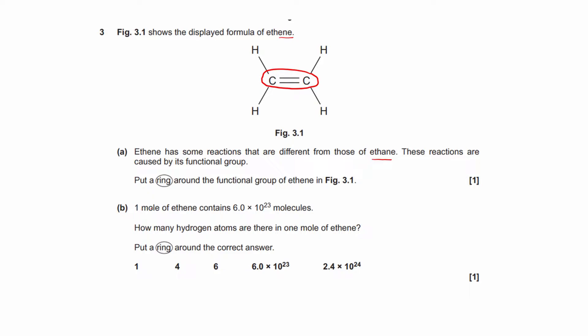Question 3b. 1 mole of ethene contains 6.0 times 10 to the power of 23 molecules. So that's a big number with 6 and 23 zeros. That's how many molecules of ethene there are in 1 mole. How many hydrogen atoms are there in 1 mole of ethene? So in each molecule, there are 4 hydrogen atoms. So we've got this number of molecules of ethene, but in each one, we have 4. So we multiply this number by 4.